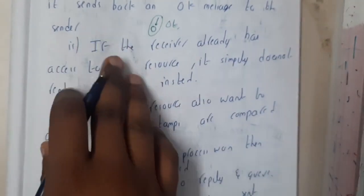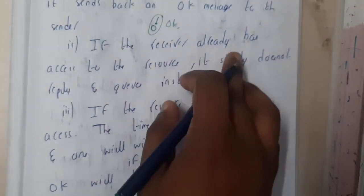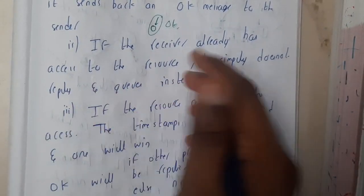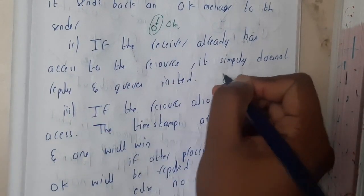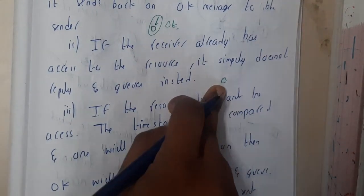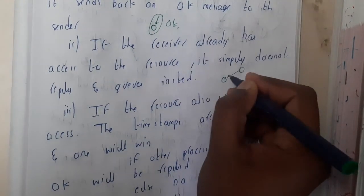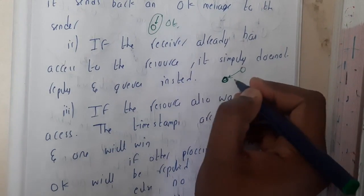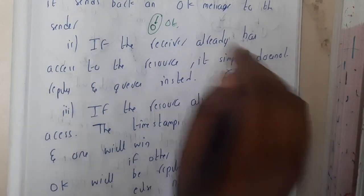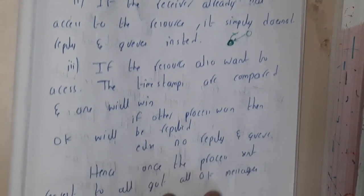If the receiver already has access to the resource, it simply doesn't reply. Assume that the resource is already being used by the receiver. You sent a request here, but this guy is already using the resource, so in that situation no reply will be given.